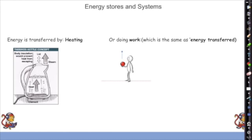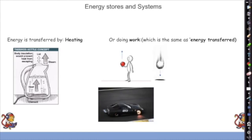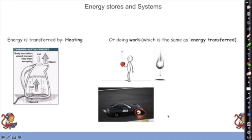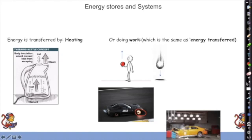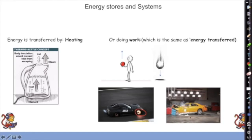When we throw a ball upwards, chemical energy in the arm transfers into the kinetic energy of the ball. As the ball falls back down, gravitational potential energy transfers into kinetic energy. A speeding car braking hard glows red on the brake pads because kinetic energy is being transferred into thermal energy. When a car crashes, kinetic energy transfers into the crumple zones as they deform.